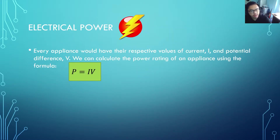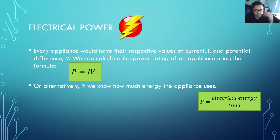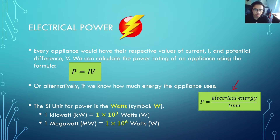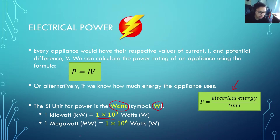Every appliance has its respective values of current and potential difference or voltage. We can calculate the power rating of an appliance using the formula P equals IV, or you can also use the formula power equals energy over time. The SI unit for power is the watt, symbol capital W. Common larger units include the kilowatt, where 1 kilowatt equals 1000 watts, and the megawatt, which equals 1 times 10 to the power of 6, or 1 million watts.